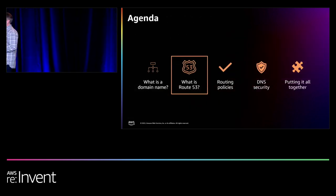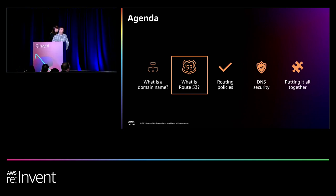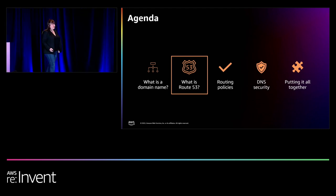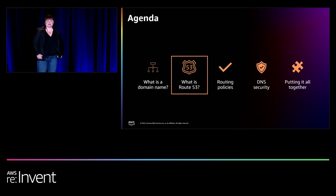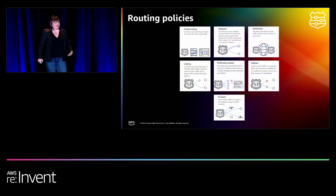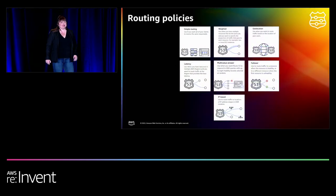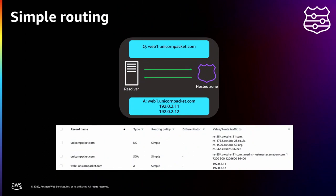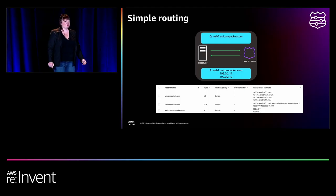When you create a record, you choose a routing policy which determines how Route 53 is going to respond to queries. There are seven routing policies. First — simple routing, emphasis on the simple. It's used to route traffic to a given resource in your domain, for example the web server serving the Unicorn Packet website. Second — weighted routing policy. You can use this to route traffic to resources in your domain using proportions you specify. If one resource has a weight of 50 and another has a weight of 30, when queried the answer will be the one with the highest weight.